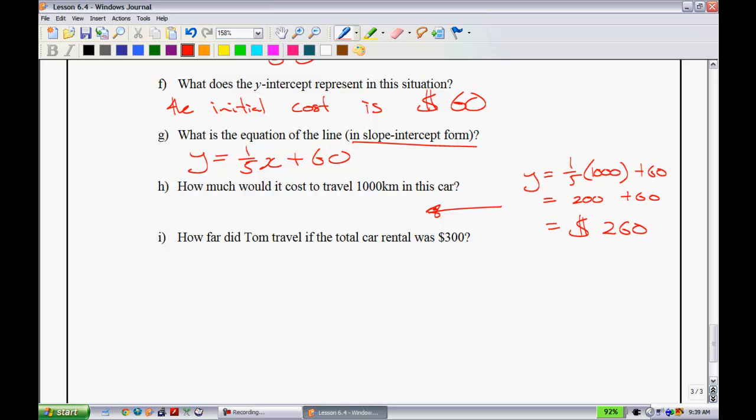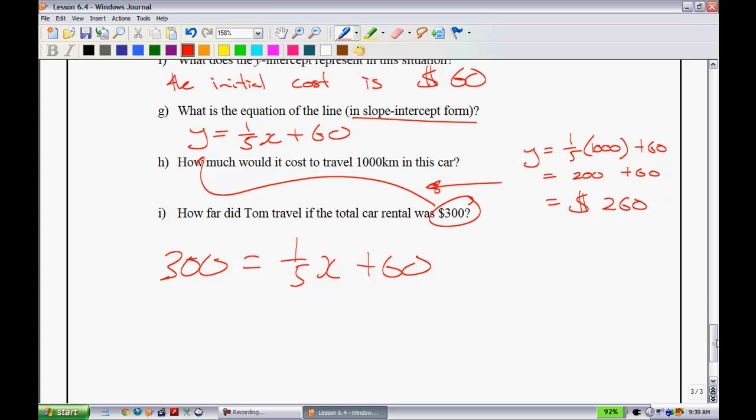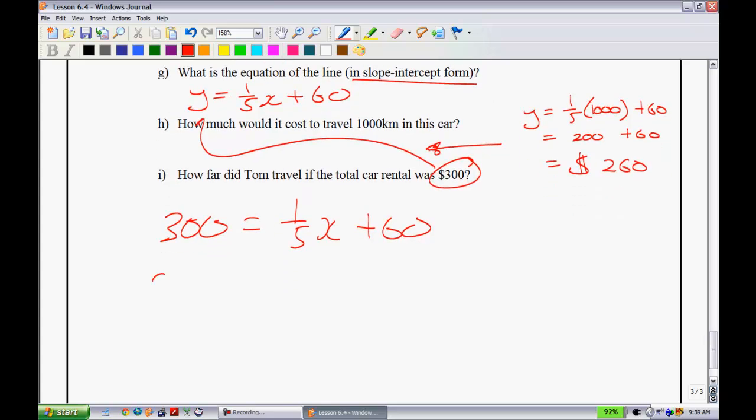How far did Tom travel if the total car rental was $300? So this time they're telling me what the cost is. That means I'm going to put it in for this y. So I have 300 is equal to 1 fifth x plus 60. And I need to figure out how far I've gone, figure out x. I subtract 60 from both sides. So I have 240 is equal to 1 fifth x. Remember, if you have a fraction and you want to try to get rid of it, you multiply by the reciprocal. So I'm going to multiply this side by 5 and then multiply this side by 5. Those cancel. You have x is equal to 5 times 240. We know that 5 times 200 is going to give you 1,000. 5 times 40 is 200. Add those together and you have 1,200 kilometers.